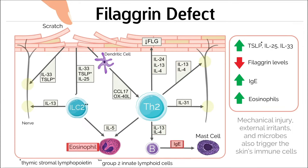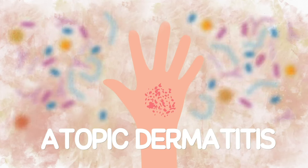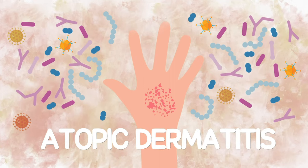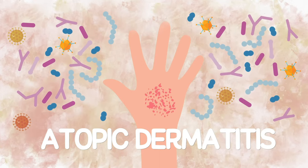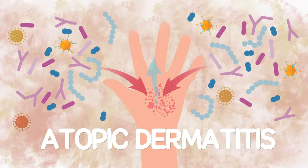Mechanical injury, external irritants, and microbes also trigger the skin's immune cells and increase the formation of inflammatory cytokines, especially IL-25, IL-33, and TSLP, which play a vital role in activating the Th2 cascade. All of these factors work together to further compromise the integrity of the skin, creating greater permeability for external irritants to penetrate the barrier and increased transepidermal water loss.